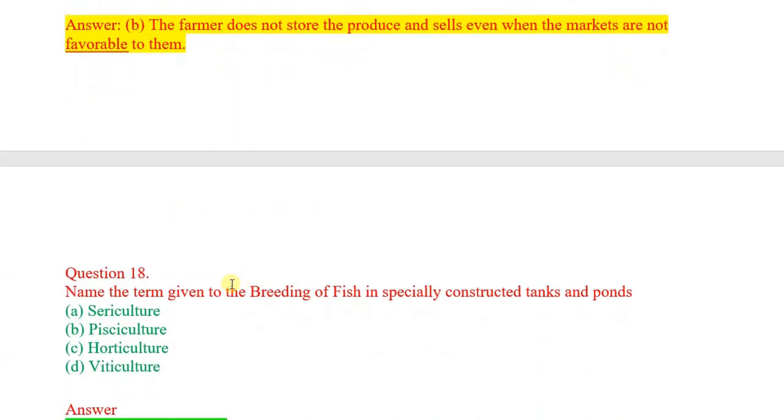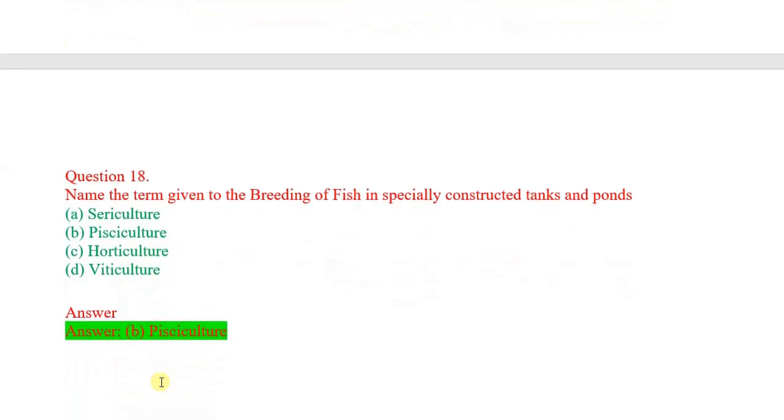Question number 18: Name the term given to the breeding of fish in specially constructed tanks and ponds. Options: fishery culture, horticulture, viticulture. Correct answer: pisciculture.